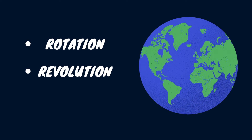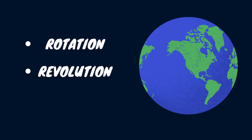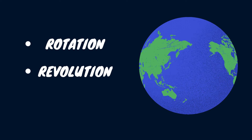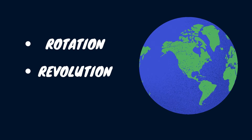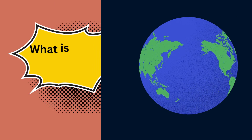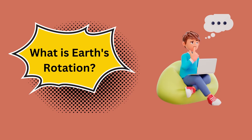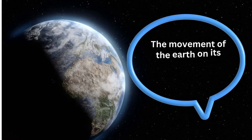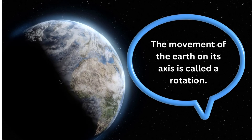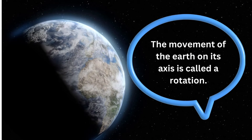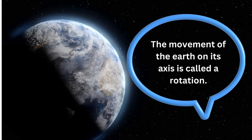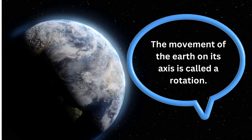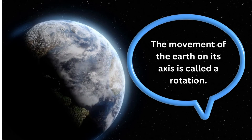The Earth moves in a counterclockwise direction and in two different ways: rotation and revolution. So what is the Earth's rotation? The movement of the Earth on its axis is called rotation. Each day, the Earth makes one complete rotation on its axis.